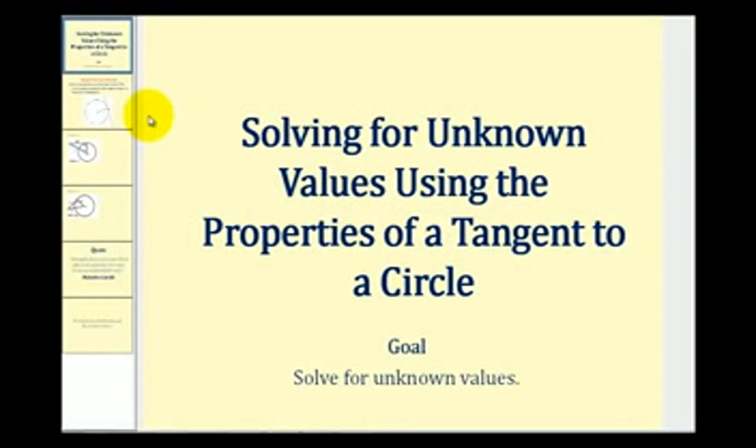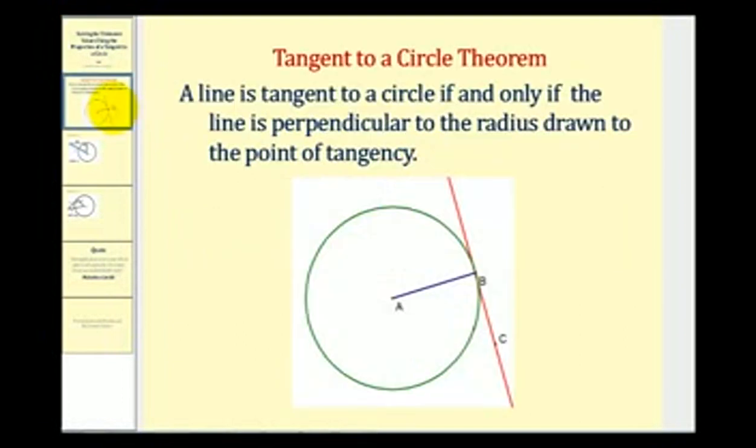Welcome to a lesson on solving for unknown values using the properties of a tangent to a circle. Let's first review that property. A line is tangent to a circle if and only if the line is perpendicular to the radius drawn to the point of tangency.